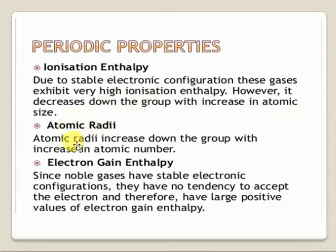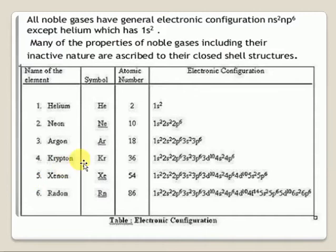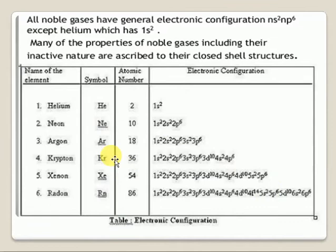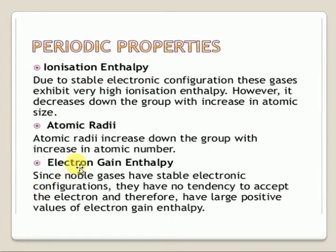Due to their stable electronic configuration, noble gas molecules generally have the highest ionization energy. However, ionization energy decreases down the group. When it decreases down the group, atomic size increases. When atomic size increases, the effective nuclear charge decreases, and ionization energy decreases. Atomic radii increase down the group — when the principal quantum number n increases, the number of shells increases, so atomic radii increase.